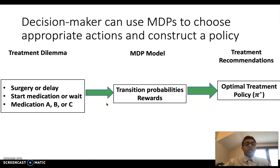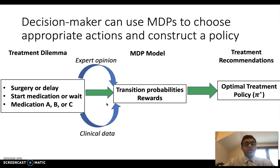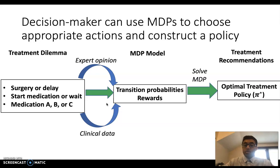The decision maker can use these Markov decision processes to choose appropriate actions and construct what's called a treatment policy. A treatment dilemma could be whether to give surgery to a patient or delay it, whether to begin medication or delay, or to choose between different medications. What goes into creating this MDP model is expert opinion and clinical data, from which we derive our transition probabilities and rewards. Solving this Markov decision process yields treatment recommendations, and we call the optimal treatment policy pi star, which corresponds to the optimal action that maximizes our rewards — in this case, quality adjusted life years.